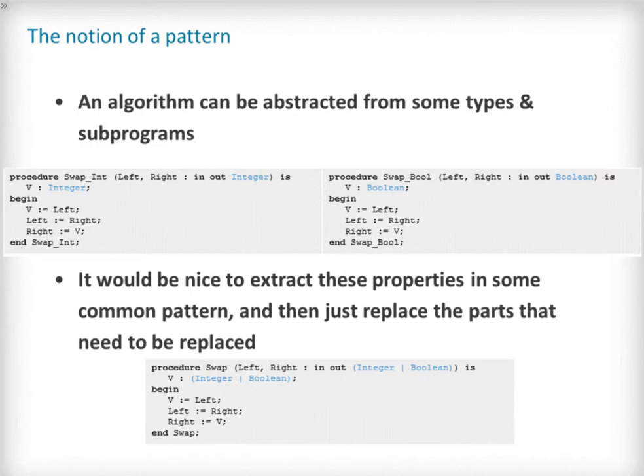The subject of this lecture is centred on identifying patterns of logic within your program design and algorithms. It is possible to abstract an algorithm's implementation from details of the data types and utility sub-programs that it uses to achieve its goals. In these example snippets we see two procedures whose bodies are identical but differ only in their declarative part and parameter specifications. The art of generic programming involves determining where abstractions can be safely made and packaging the algorithm into an instantiable template, as shown in the lower pseudocode snippet. The procedure body has been abstracted from the details of the data type it is operating on, and this example could be compiled for either integers or boolean parameter types with no change to the actual procedure body.